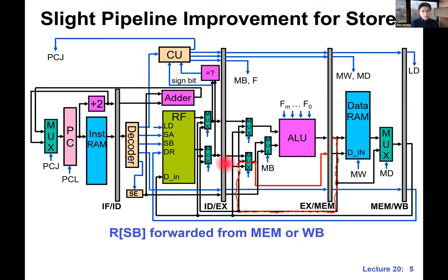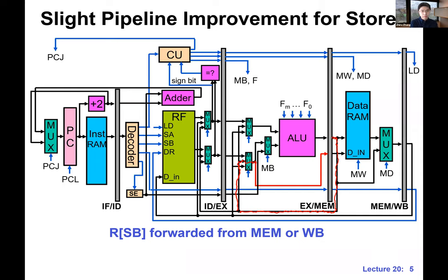Since this wire is behind the MUX, we can also do forwarding from the WB stage to EX. It's a small change — not really changing much in terms of delay or area — but now we can further improve the CPI for store instructions. Just a heads up: you do need to pay attention to this kind of detail in homework and in the final exam. Make sure you know which forwarding paths are enabled and which are not enabled in the physical hardware by looking at the pipeline diagram.